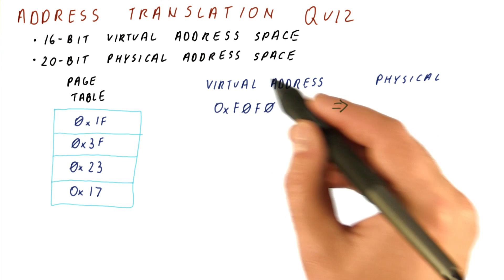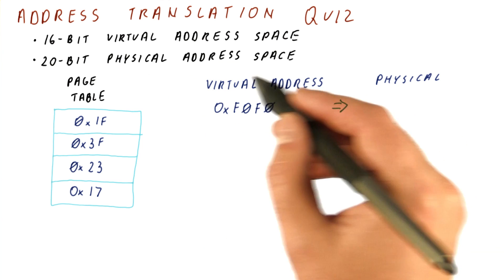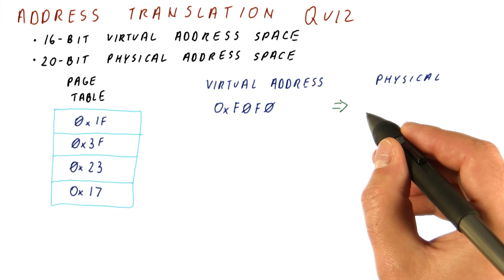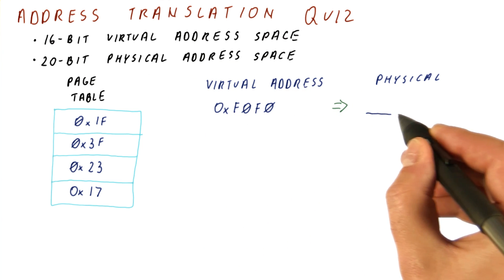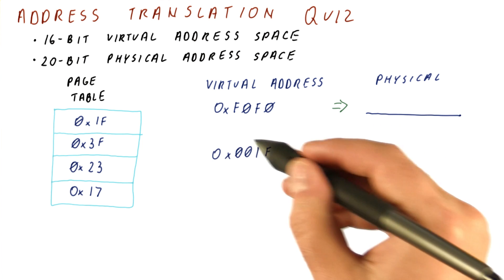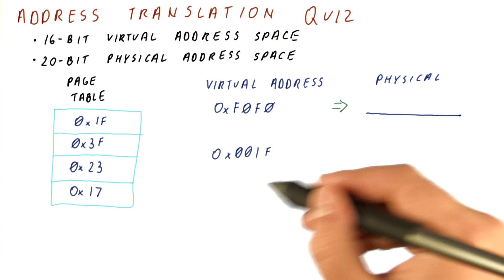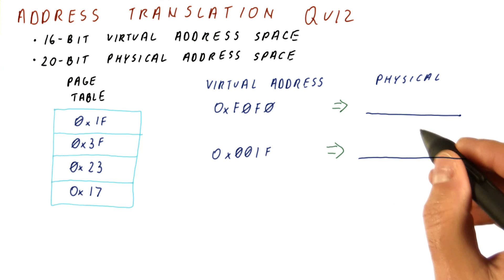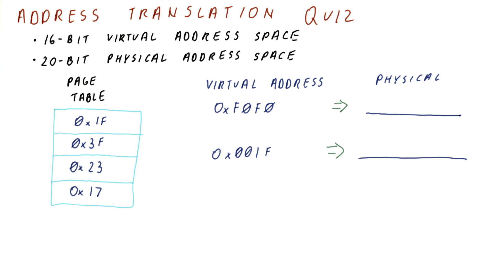Then given this 16-bit virtual address, what is the physical address it translates into? And given this virtual address, what physical address does it translate into?